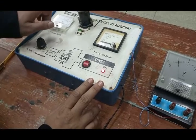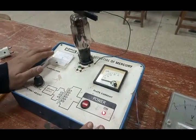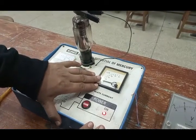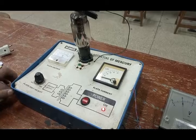Here this one is the glass tube fitted with anode and cathode in which the mercury gas is filled at low temperature and this is micro ammeter from which we can note down the values of the current.